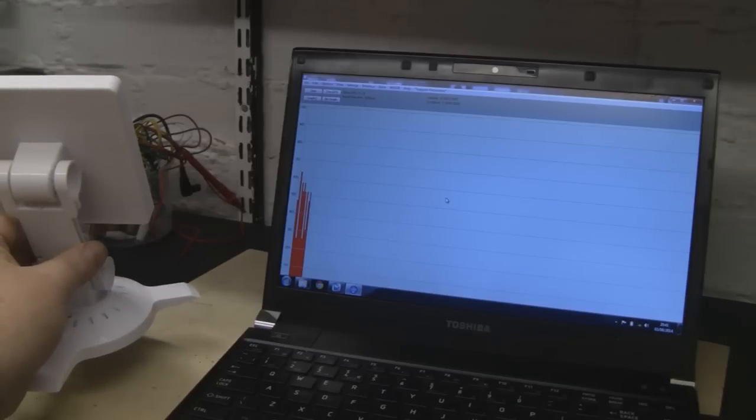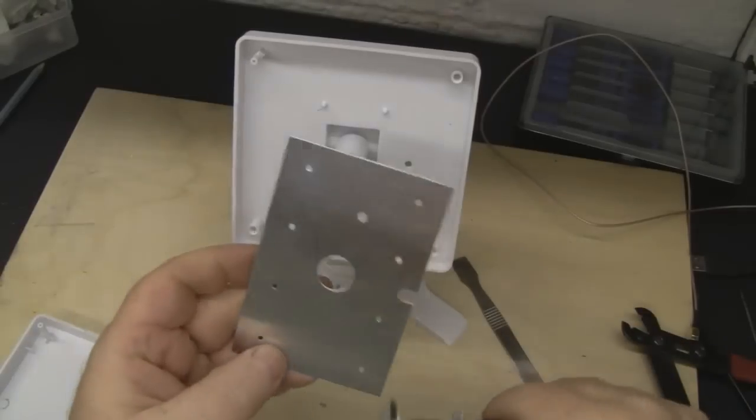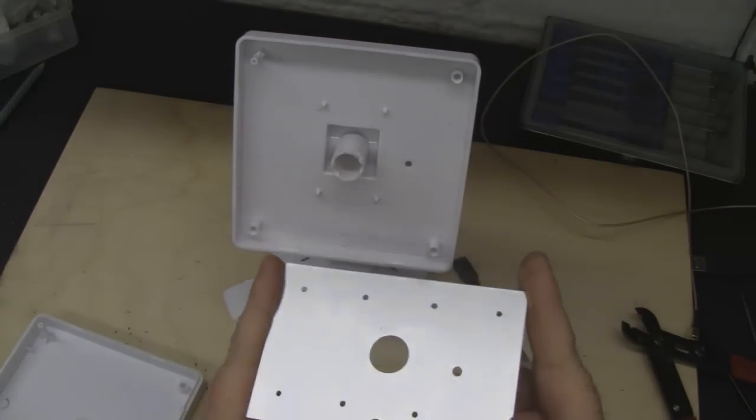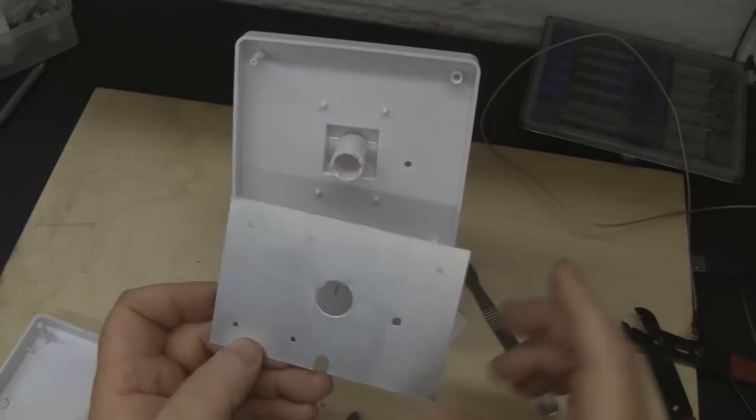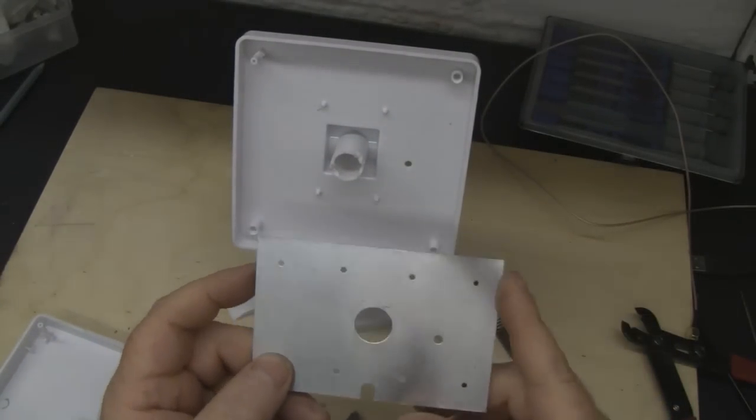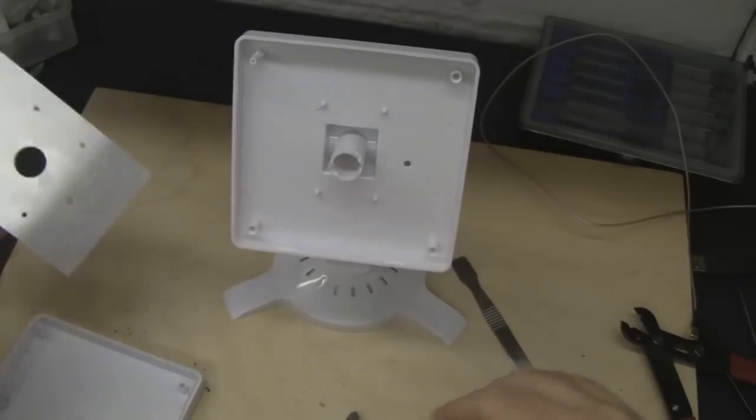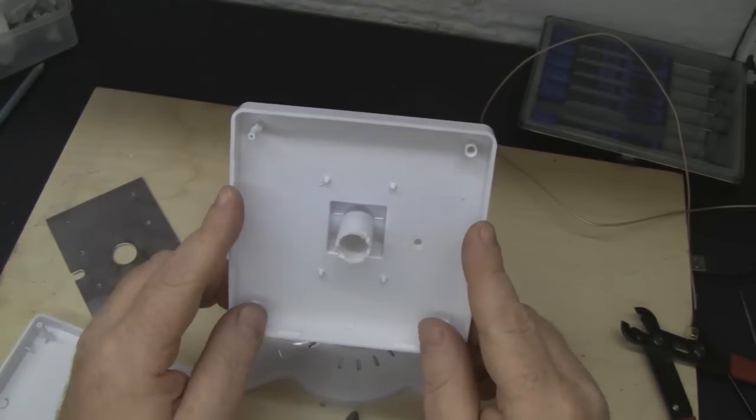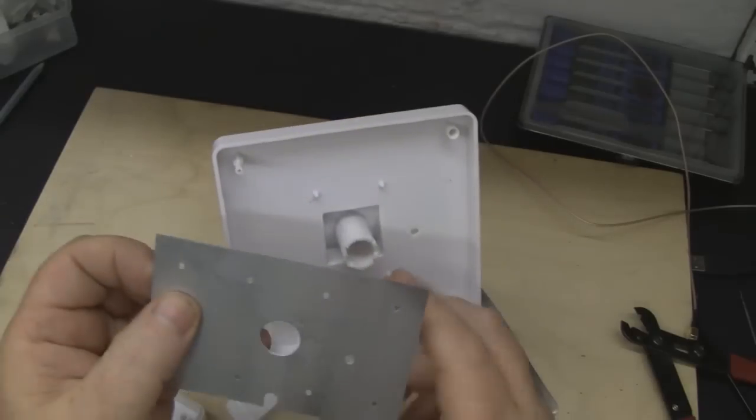I think what we're going to have to do is rip the guts out of this and put my own bi-quad antenna element in there. Ideally, the reflector for a bi-quad wants to be one wavelength square. This is nowhere near one wavelength square. I've also measured the actual case itself and we haven't got enough space in here to do one wavelength, but it's going to be a lot better than this little piece of aluminum that wasn't connected to the ground anyway.